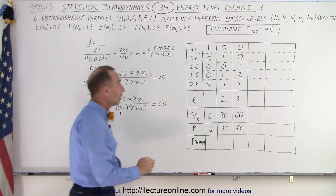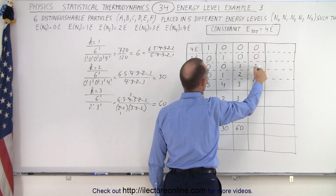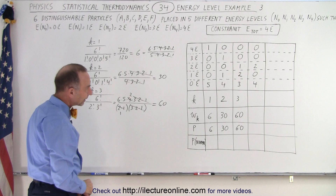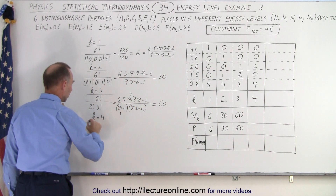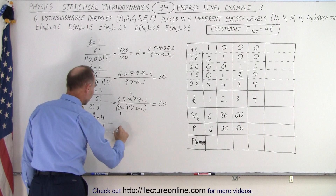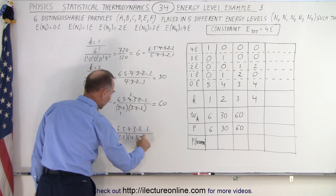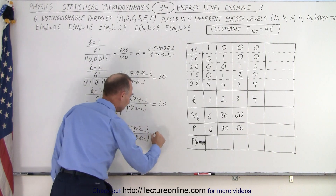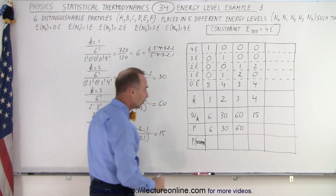Instead of one particle in the two-quantum-energy level, we can put two particles there. Two particles times two quantum energies each gives a total of four quantum energies, so zero go in other non-zero levels and the remaining four go in the ground level. That's macrostate four. For k equals four, six factorial divided by two factorial and four factorial equals six times five times four times three times two times one divided by two times one times four times three times two times one. The two and six simplify to give three times five, which is 15. We have 15 microstates and a probability of 15.